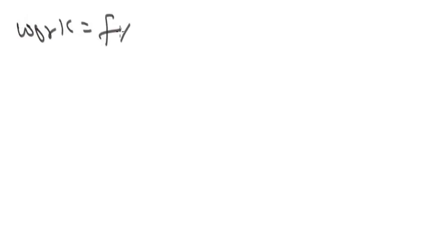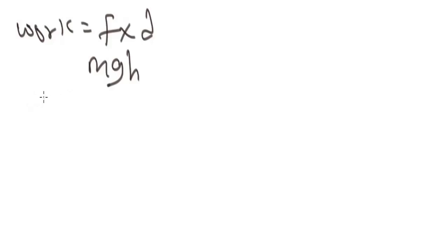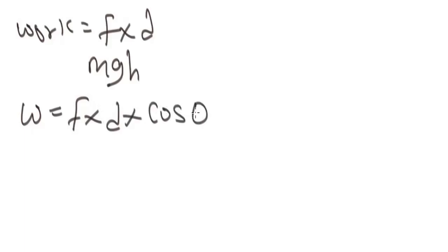Work can also be calculated using mgh when mass and height are given as parameters and force is not given. Also note that when force is inclined at an angle theta to the horizontal, the work done W is calculated using force times distance times cos theta. When the force is inclined to an angle vertically,